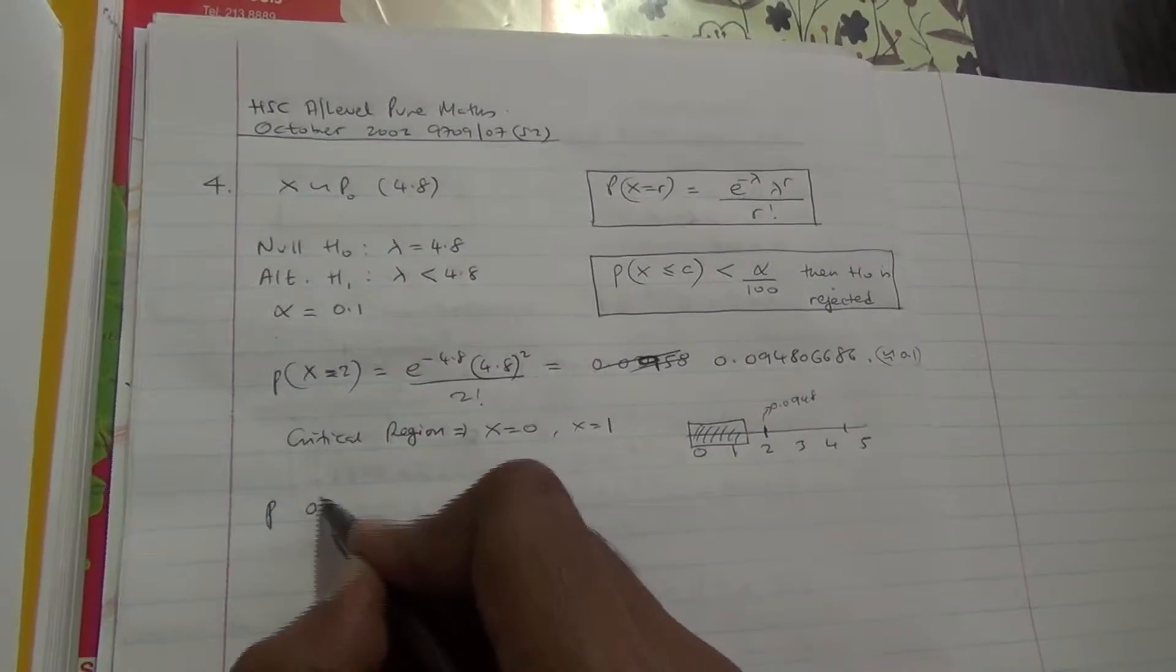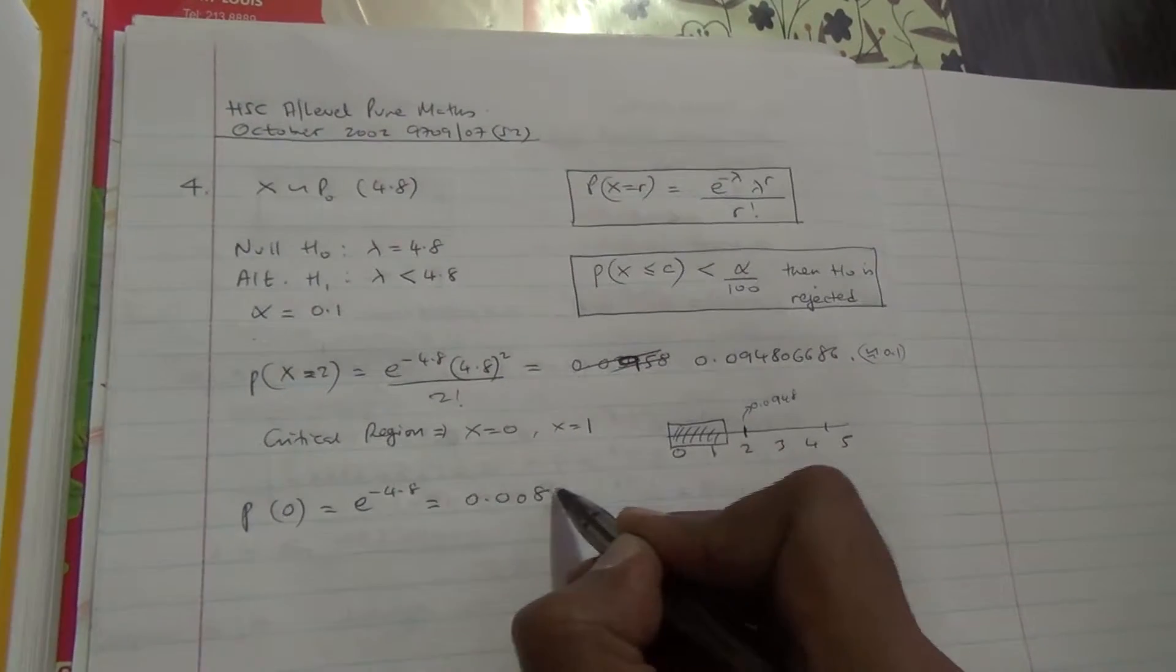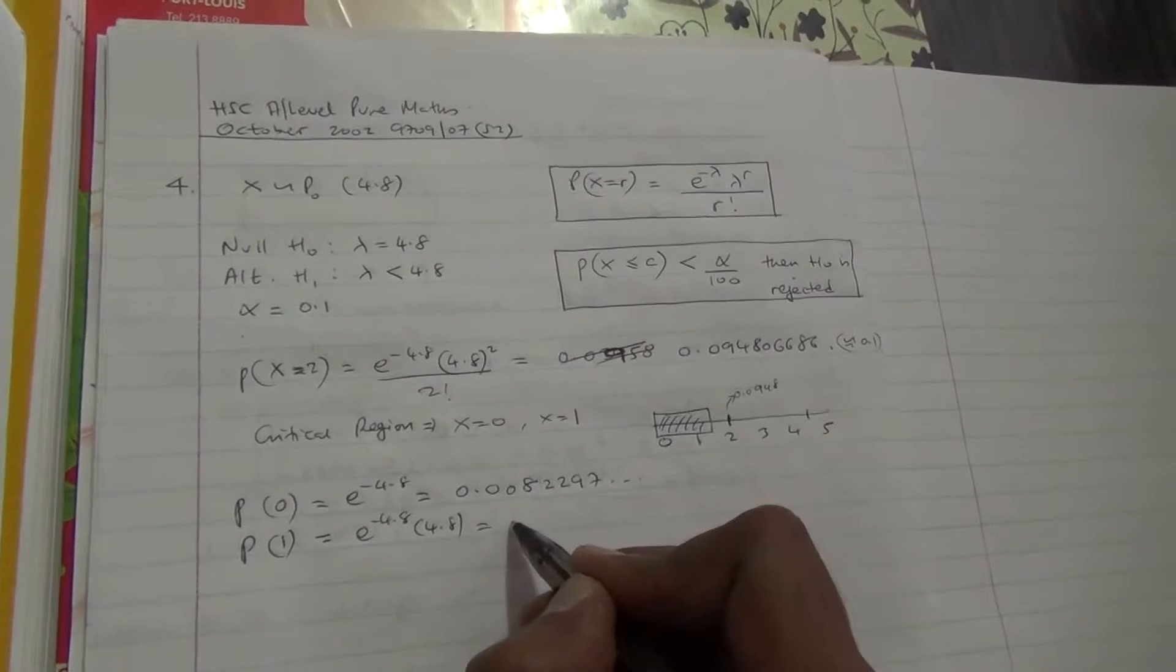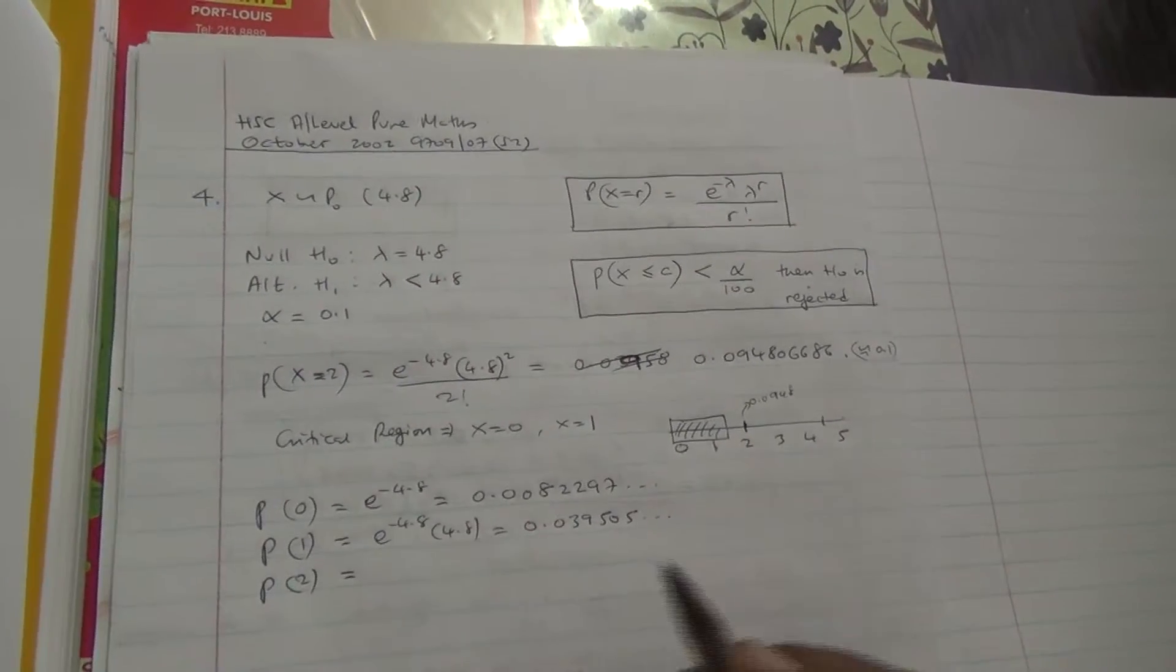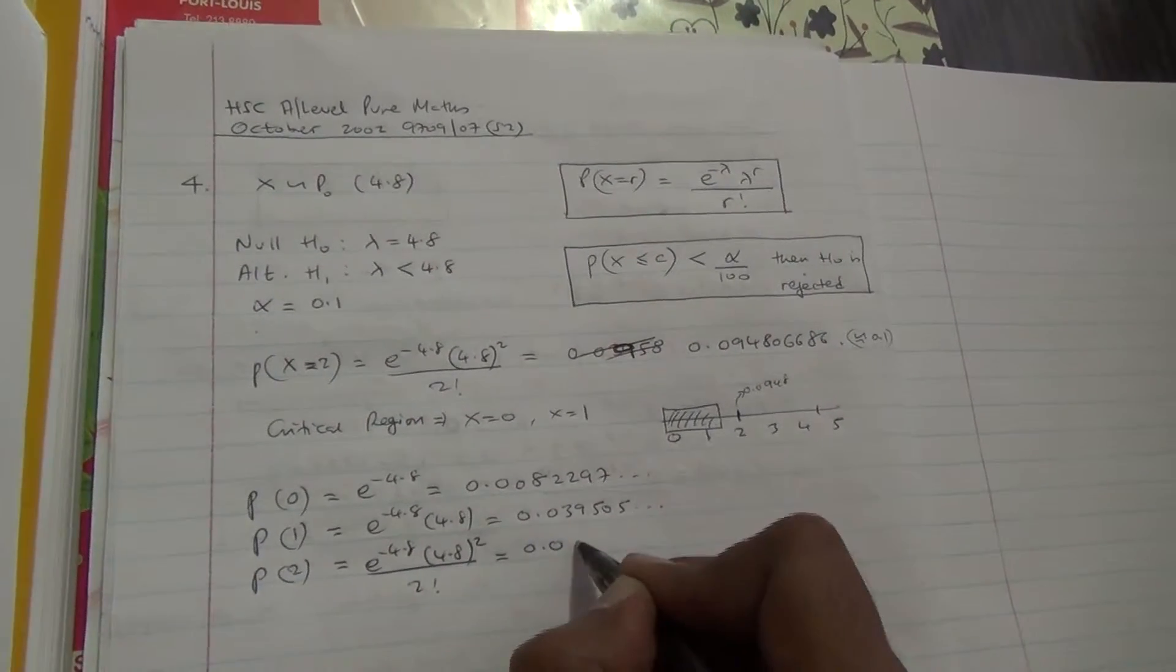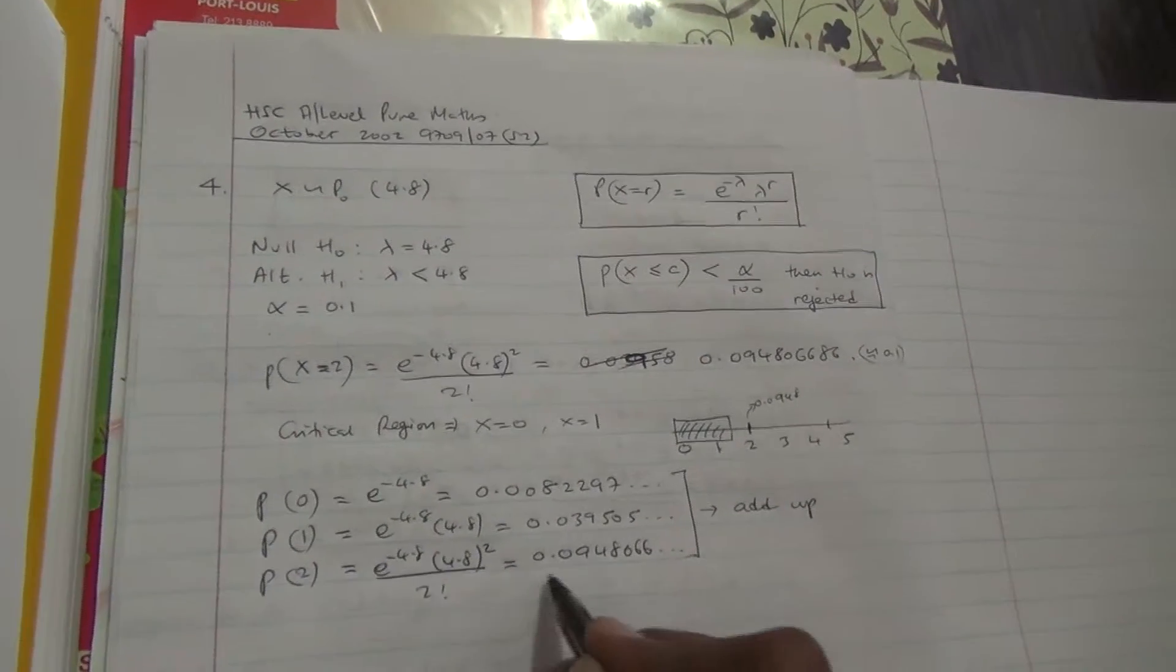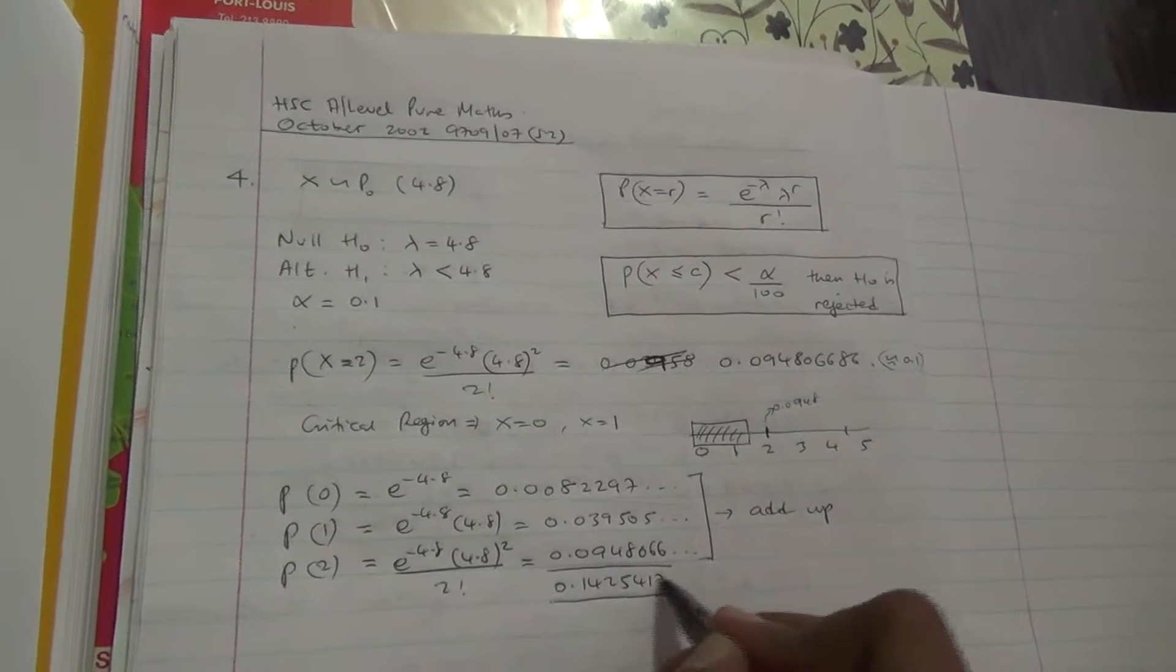So what's the probability of having no accident at all? It's going to be e to the power of minus 4.8, and this one if you work it out, it's going to give you 0.0082297. The probability of having one accident is going to be e to the power of minus 4.8 times 4.8 over factorial of 1, so that's going to be 0.039505. The probability of having two accidents, we calculated that one, it's going to give you 0.0948066. If you add up all these probabilities, you're going to come up with a total probability of 0.1425.